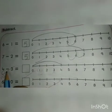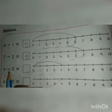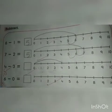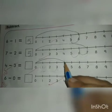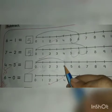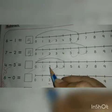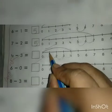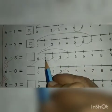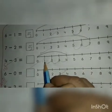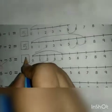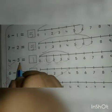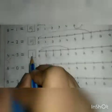Now we will go to number 4 starting from 0. And this is the sign of minus. And next number is 3. Now we will go three steps back. 1, 2, 3. Where will you stop? At number 1.